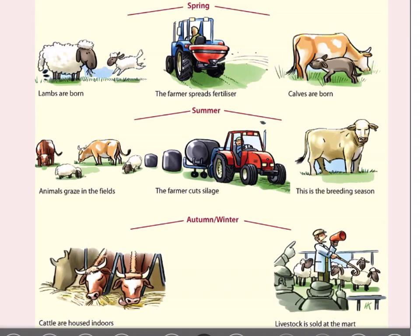The processes on Pat's farm can be divided by season. In springtime, lambs are born and calves are born - spring is a very busy season for lambing. Because Pat runs both sheep and beef cattle, he has two types of animals being born at the same time. He also spreads fertilizer in springtime to get the land nice and healthy.